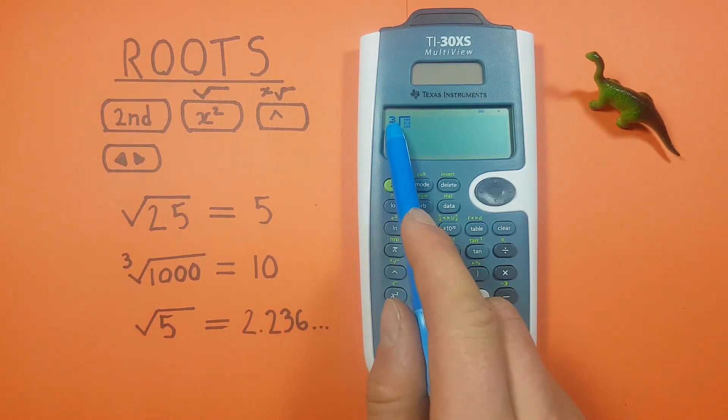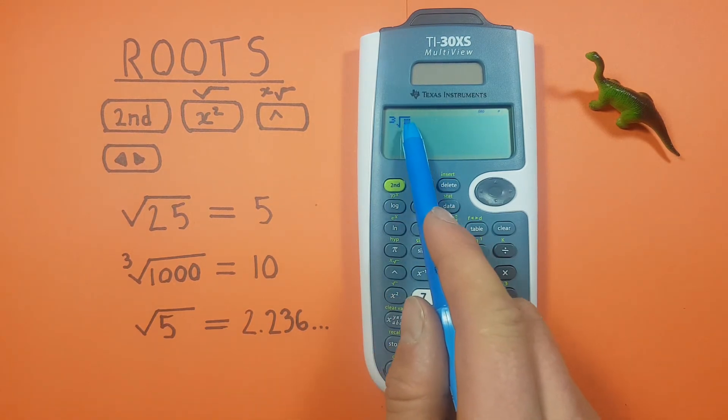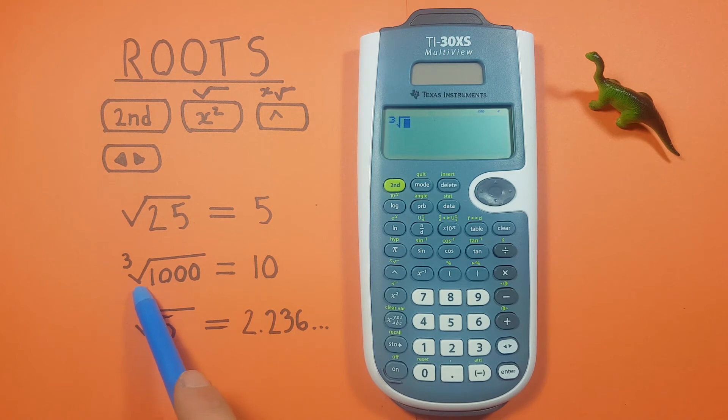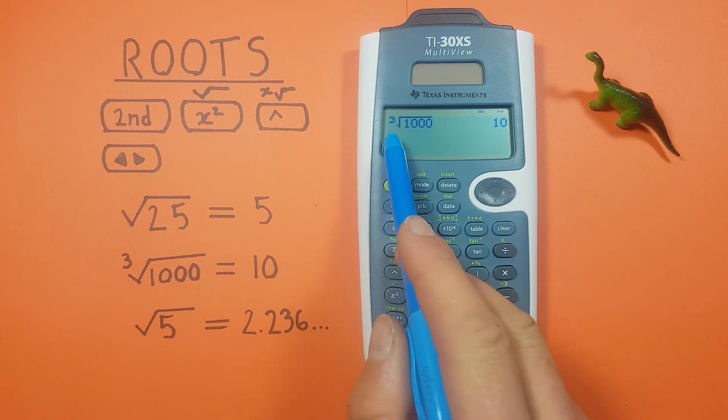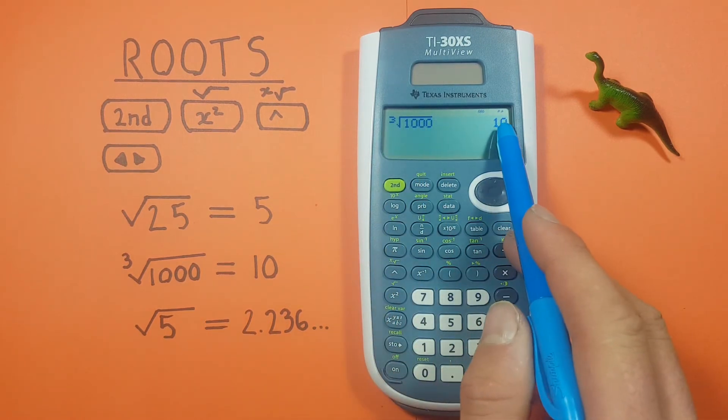You can see the 3 has moved into the root position there and we're ready to enter what's under the root line. We want to find the cube root of 1000, so we enter 1000 and press enter and we see the cube root of 1000 is equal to 10.